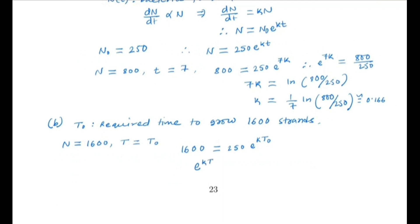We have 1600 equals 250 e^(kT₀). So e^(kT₀) equals 1600 by 250, and kT₀ is ln(1600/250). Therefore T₀ is ln(1600/250) divided by k. What is k? It is 0.166. If we calculate this we will get T₀ will be approximately 12.20. So after 12.2 hours this bacteria will grow to 1600 strands.